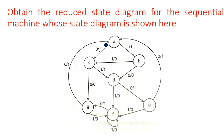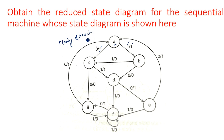What type of circuit is it — Mealy or Moore? Moore means the output depends only on the present state of the flip-flop. But here the output depends on present state as well as input: if input is equal to 1, output is equal to 0; if input is equal to 0, output is equal to 1. That means present state and present input together decide the output, which is why it is a Mealy circuit.